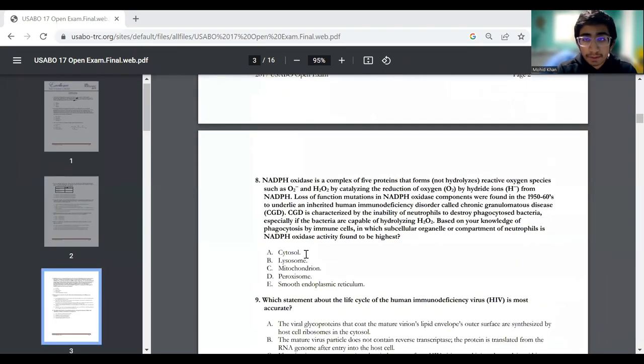Question number eight. This is a pretty long question. NADPH oxidase is a complex of five proteins that forms, not hydrolyzes, reactive oxygen species such as O2- and H2O2 by catalyzing the reduction of oxygen by hydride ions from NADPH. Loss of function mutations were found that causes CGD, and CGD is characterized by the inability of neutrophils to destroy phagocytosed bacteria, especially if the bacteria are capable of hydrolyzing H2O2. You need to see which compartment or subcellular organelle has the most NADPH oxidase.